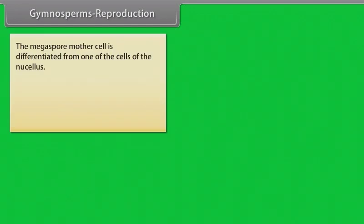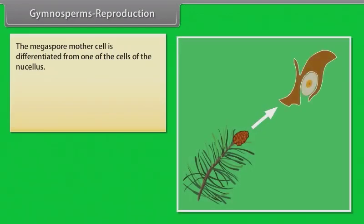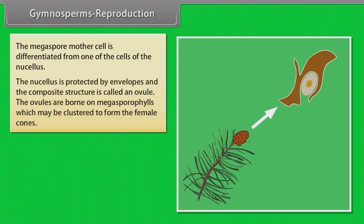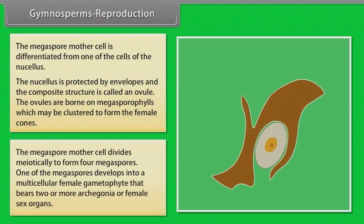Gymnosperms Reproduction: The megaspore mother cell is differentiated from one of the cells of the nucellus. The nucellus is protected by envelopes and the composite structure is called an ovule. The ovules are borne on megasporophylls which may be clustered to form the female cones. The megaspore mother cell divides meiotically to form four megaspores. One of the megaspores develops into a multicellular female gametophyte that bears two or more archegonia or female sex organs.